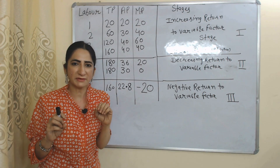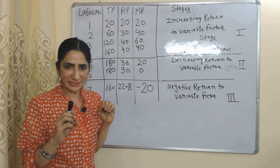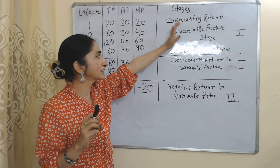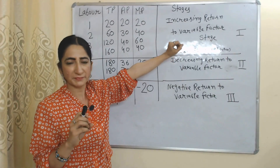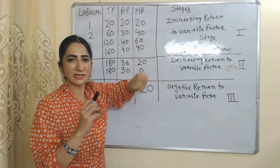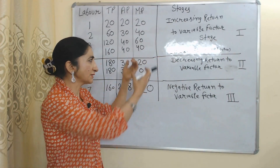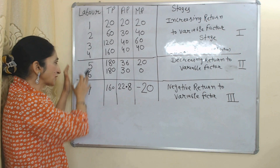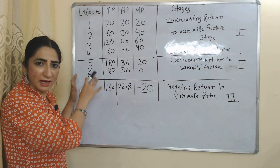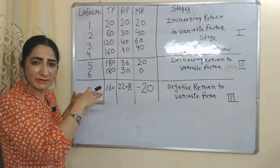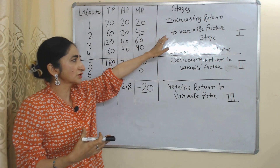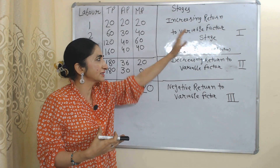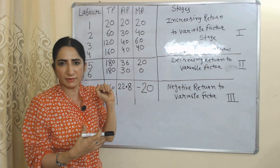This law is mainly divided into three stages. The first stage is called increasing return to variable factor. In this stage, marginal product is increasing because there is efficient utilization of our fixed factor — land. Our land still has capacity, that's why the marginal product of labor is increasing.